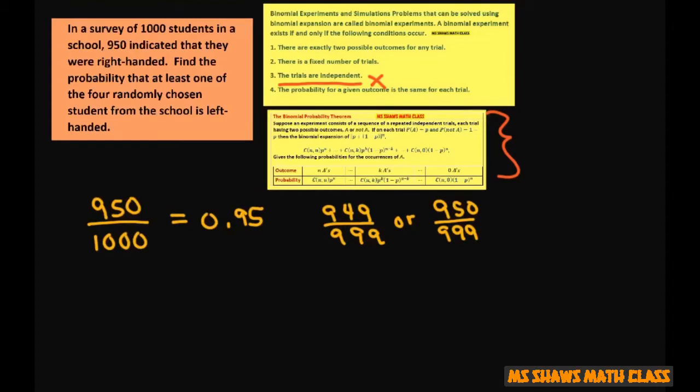So these are so close to 0.95, we can still use the binomial theorem, even though the theorem assumes a constant of 0.95.